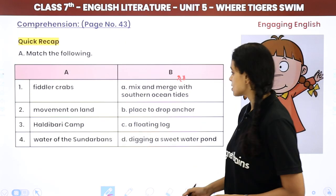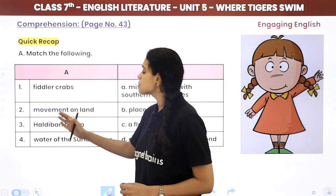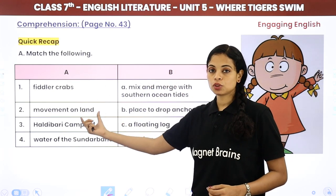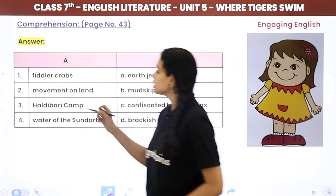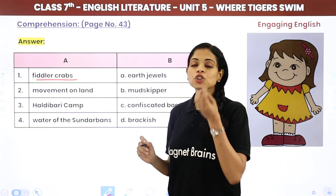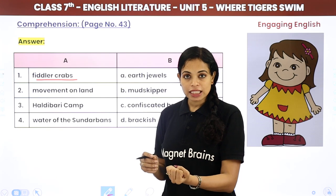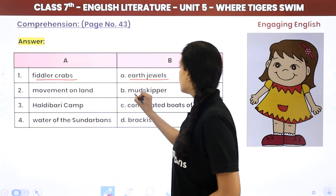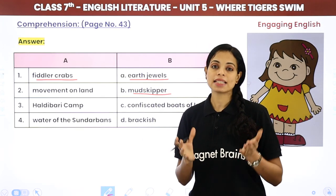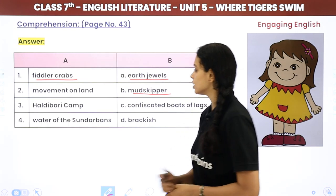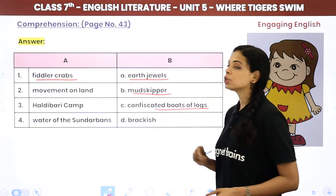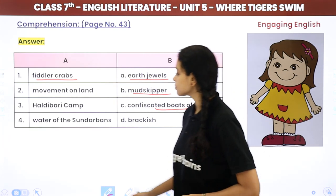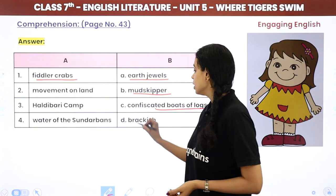We are going to start with the question answers. First, you match the following. Fiddler crabs — the answer is Jules crabs. Movement on land — mud skipper, which is a fish that can move on land. Haldi Bhaari camp — boats and confiscated goods. Water of the Sundarbans — brackish, salty.